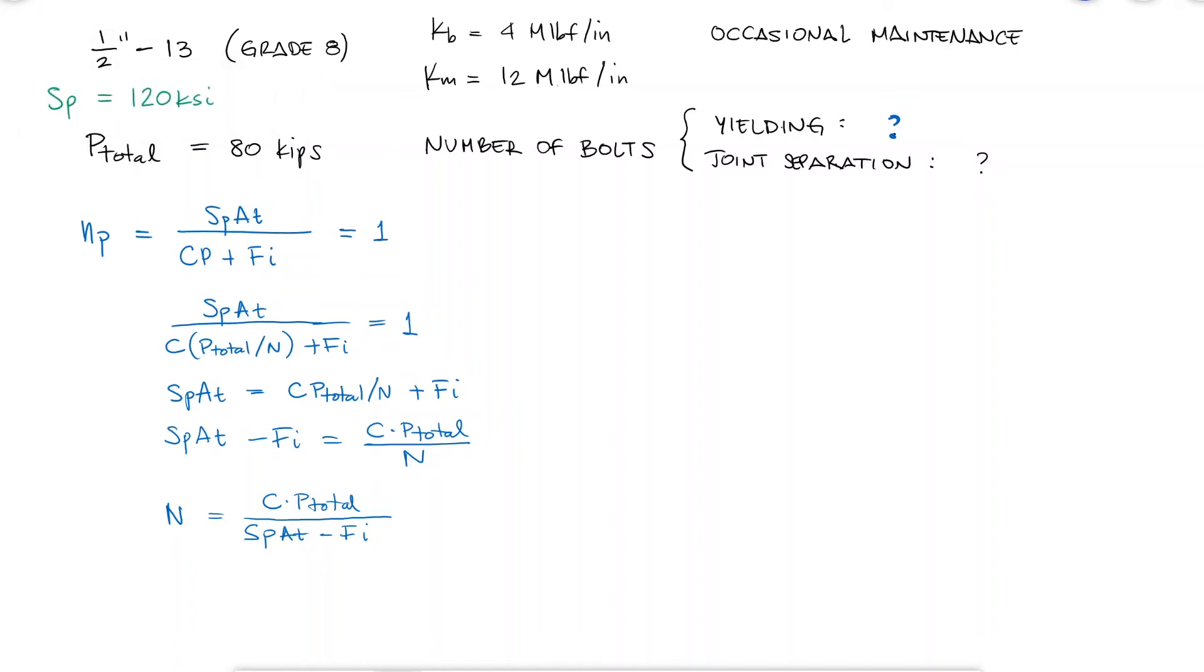For a half inch 13 bolt, we find that the area is 0.1419 inches squared, which allows us to calculate the proof load.